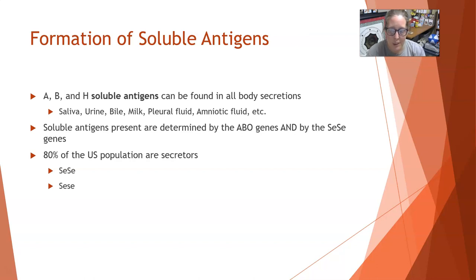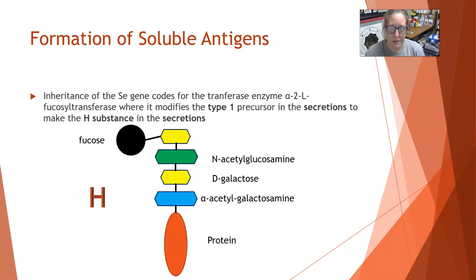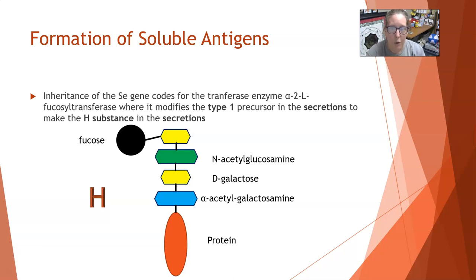The gene inherited can either be the big S, little e / big S, little e, or big S, little e / little s, little e — so either one dominant gene from each parent, or a dominant gene from one parent and a recessive gene from the other, for the secretion of these soluble antigens. The inheritance of that SE gene — the secretor gene — codes for the transferase enzyme alpha-2L-fucosyltransferase. We've met this one in the production of the ABO or ABH antigens.